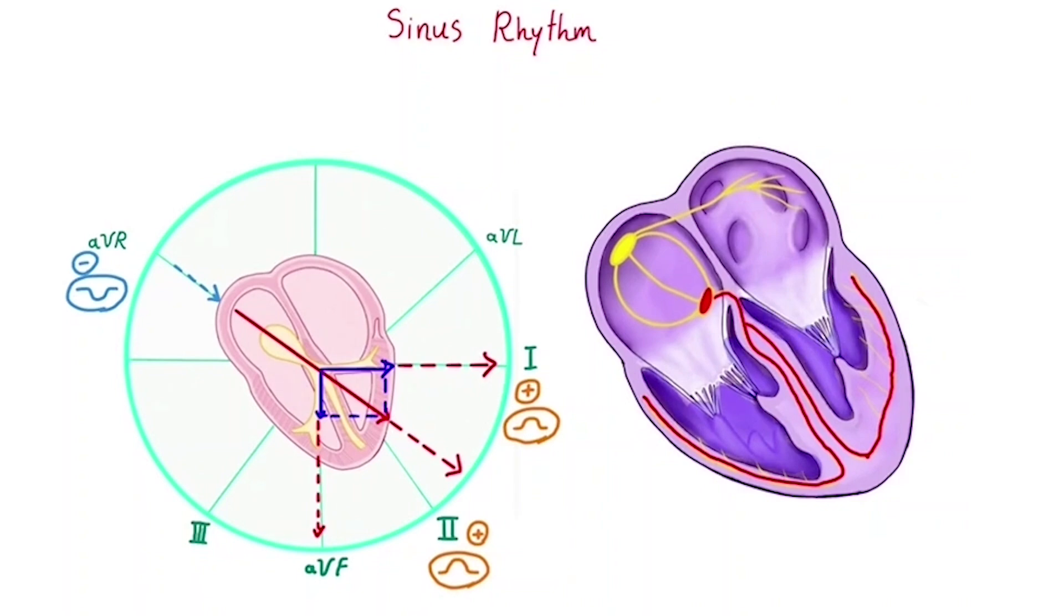Therefore, if the rhythm is truly sinus, every QRS complex must be preceded by a P wave, because the ventricular depolarization cannot occur without the atrial impulse passing through first. Finally, since the SA node is the dominant pacemaker with the highest firing rate, the heart rate it generates usually falls within the normal range of 60 to 100 beats per minute.